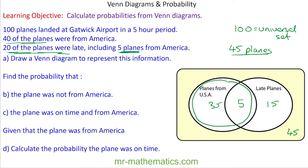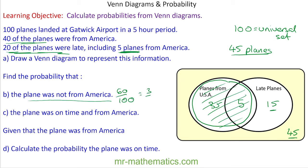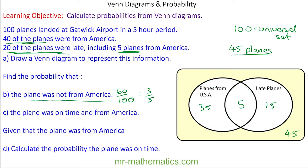Find the probability that the plane was not from America. Not from America means it must fall outside of the America oval — that would be the 15 and the 45, which is 60 out of 100, which is three-fifths. Find the probability that the plane was on time and from America. On time means not late, and from America — that is the intersection of the two, which is 5 out of 100, which is 1 over 20.